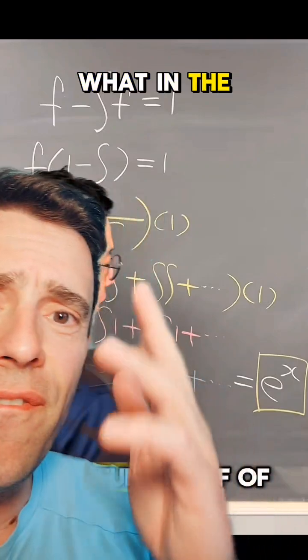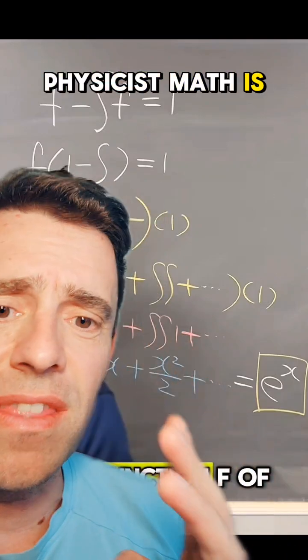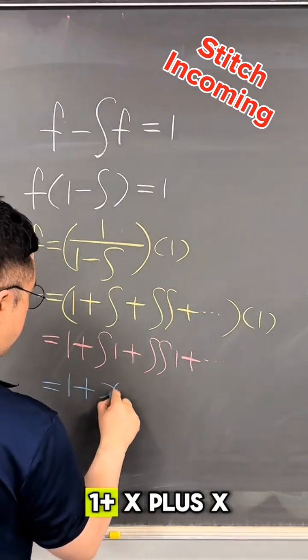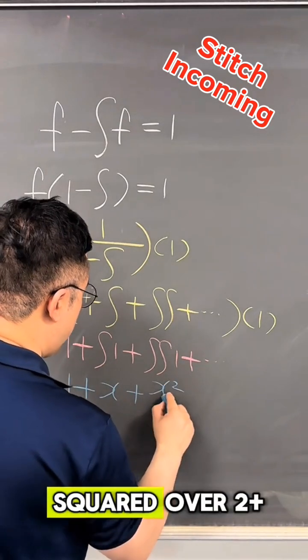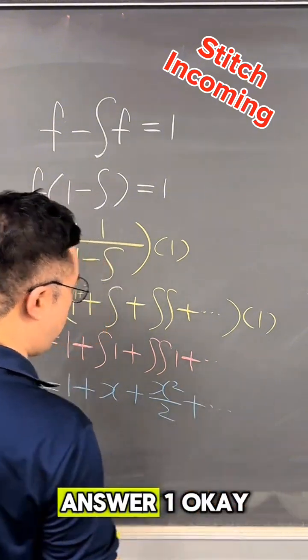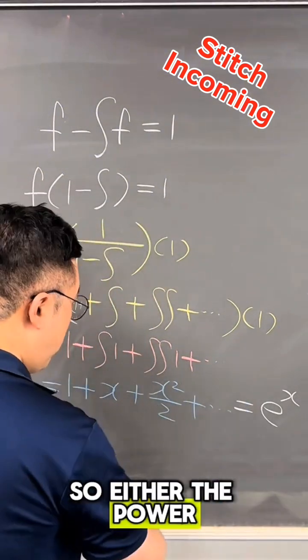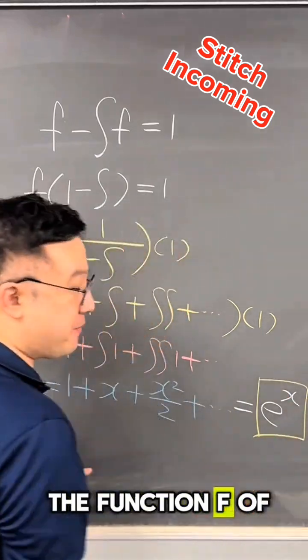What in the physicist math is this? Have you seen this type of question before? 1 plus x plus x squared over 2 plus n to 1. So this is exactly e to the power of x. So e to the power of x is now the function f of x.